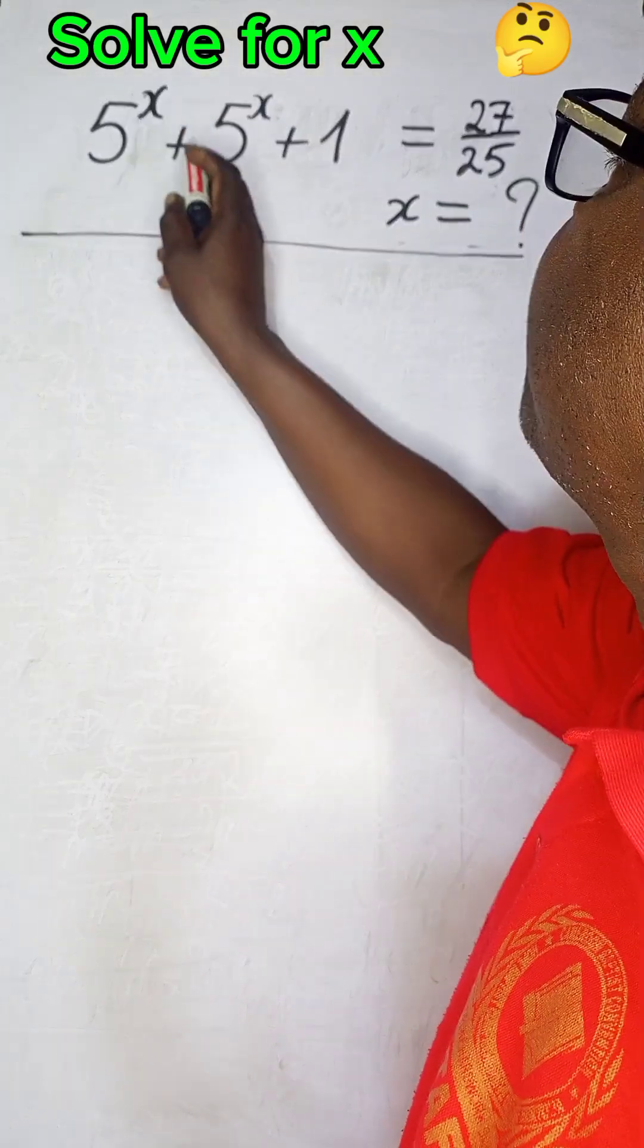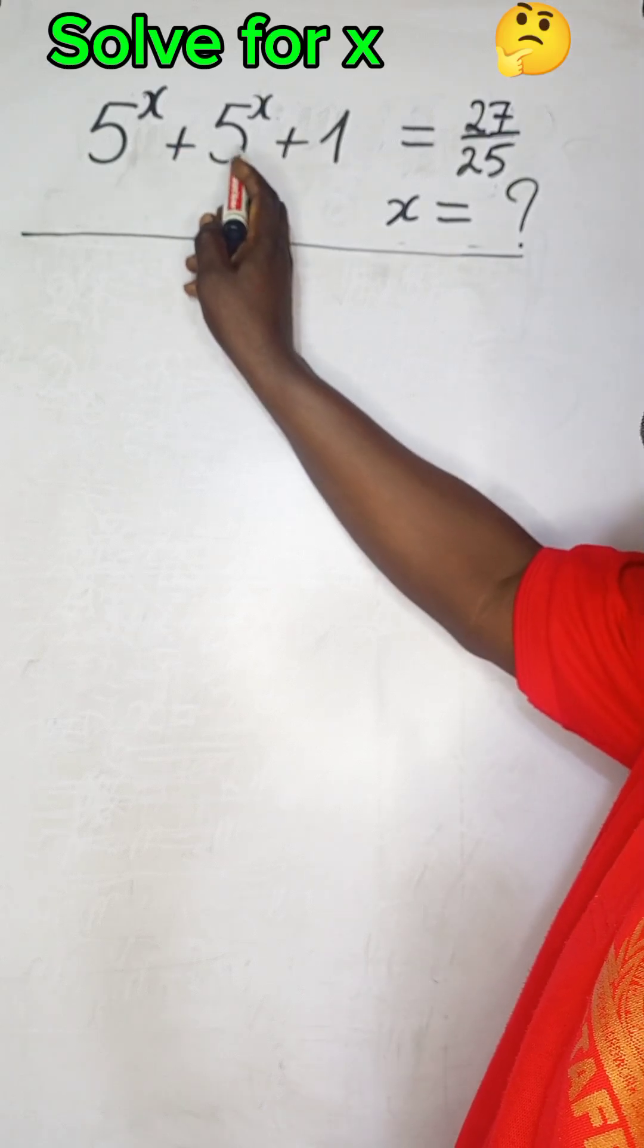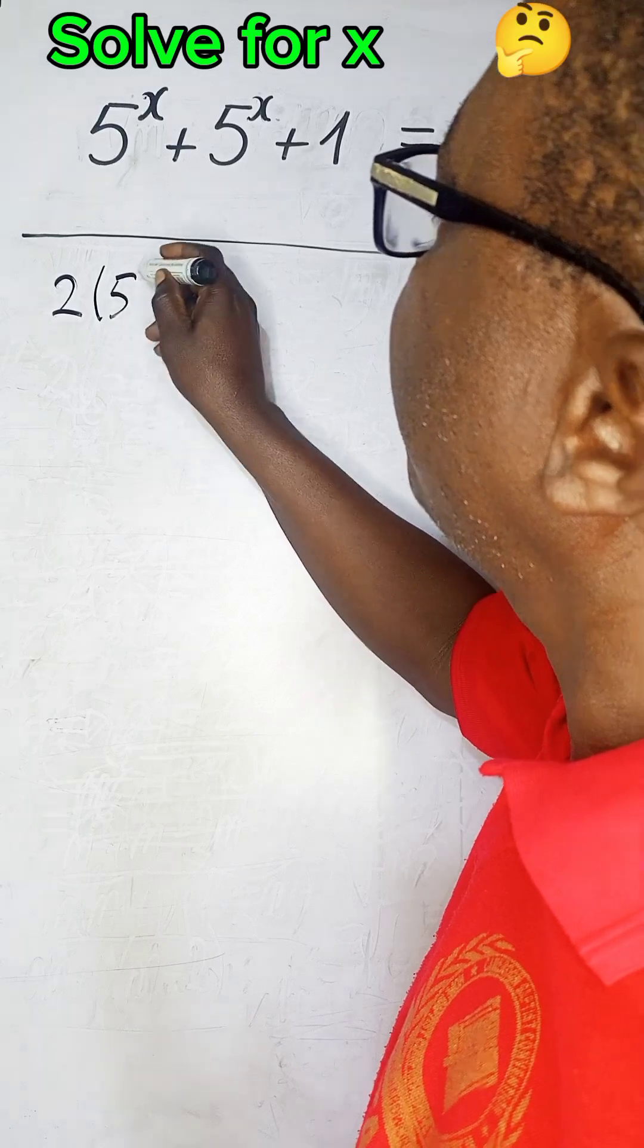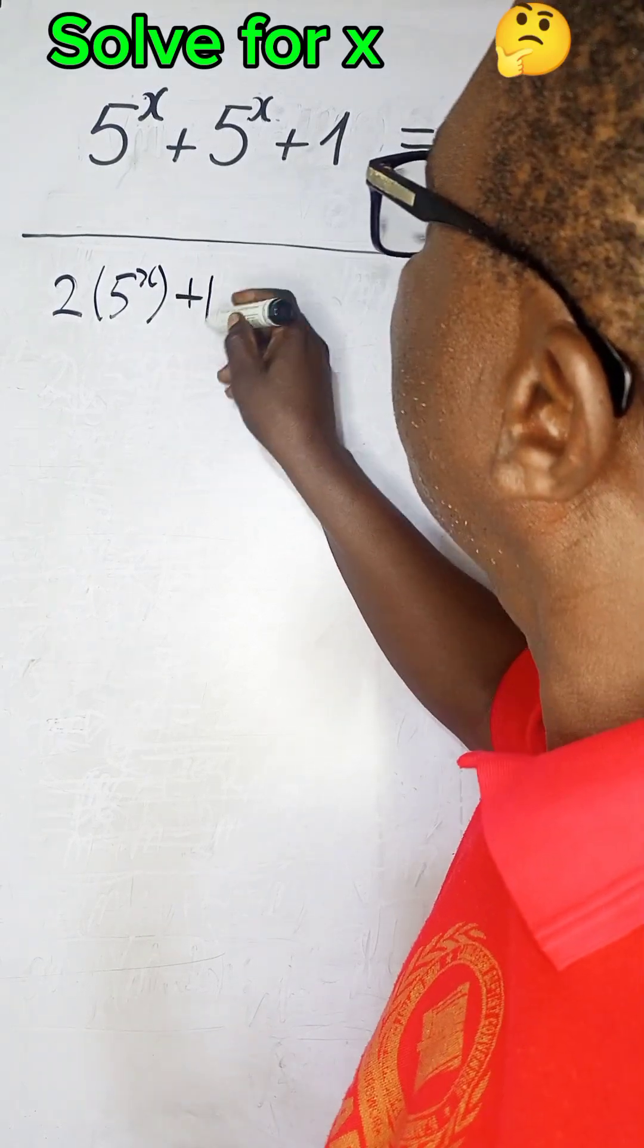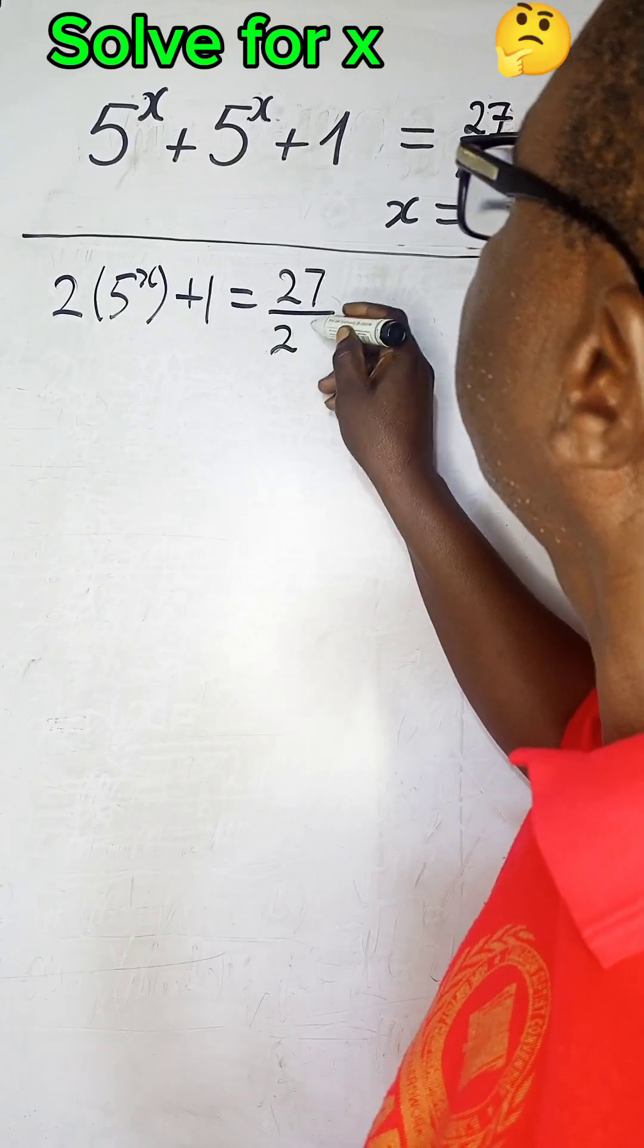We have 5^x plus 5^x. The same thing added to itself. So, how many of them are there? 1, 2. So, we have 2(5^x) + 1 = 27/25.